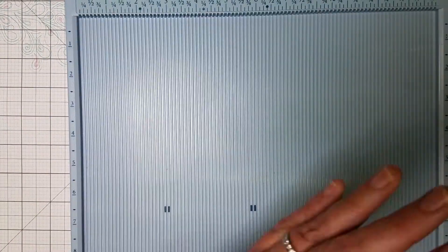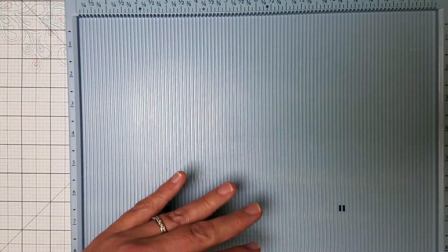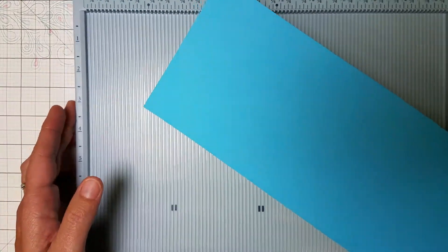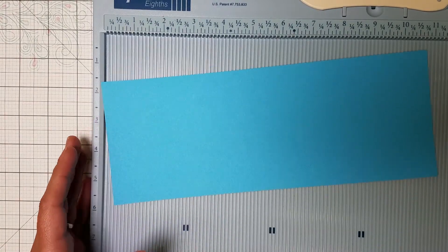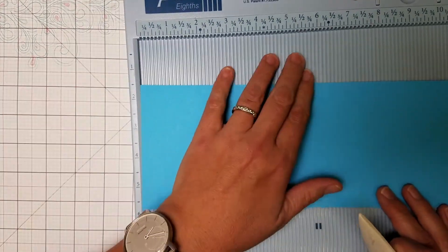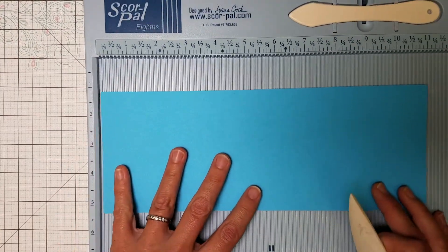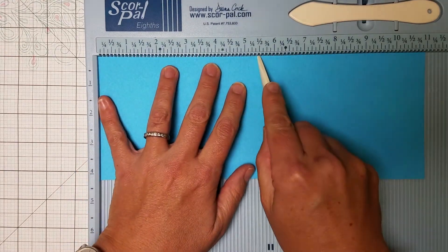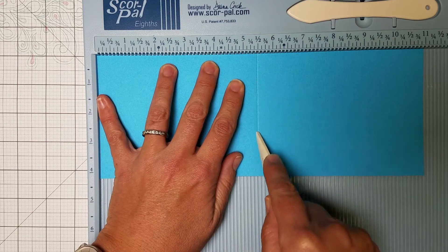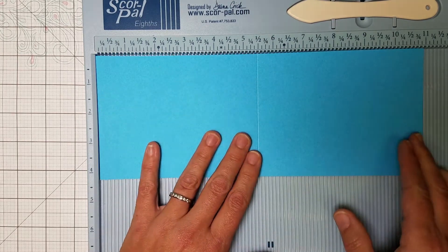Okay, so let's begin. We have our ScorPal. I'm using the new ScorPal that has the eighth-inch line scores every eighth inch, which I really really love the new feature here on this. If you don't have the upgraded eighth-inch version, I highly recommend it. And then we're going to take the 4.25 by 11 inch piece and simply score it in half at 5.5 inches.